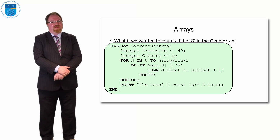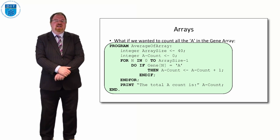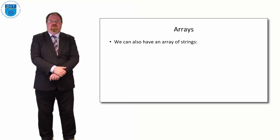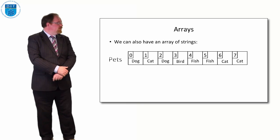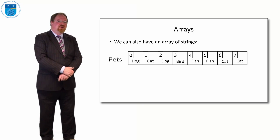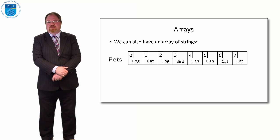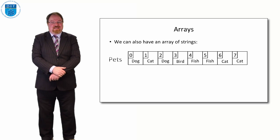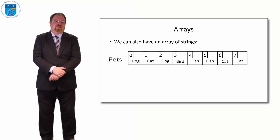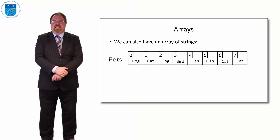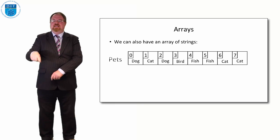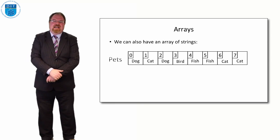As well as an array of characters, we can have an array of strings — for example, an array of pets. Person 0 has a dog, person 1 a cat, person 2 a dog, person 3 a bird, persons 4 and 5 fish, and persons 6 and 7 cats. We could ask how many people have dogs, fish, or birds — using a for loop from n=0 to 7: if pets[n] equals 'cat' then add 1 to cat_count.